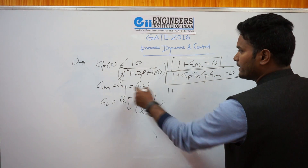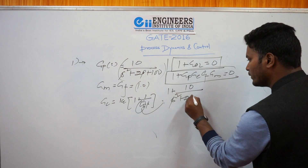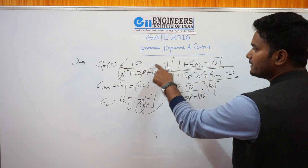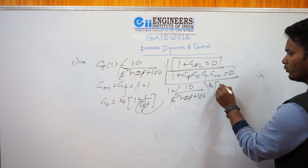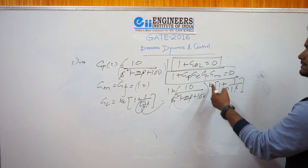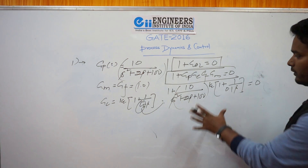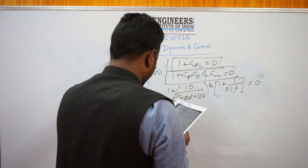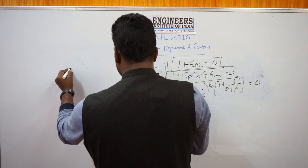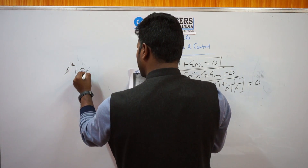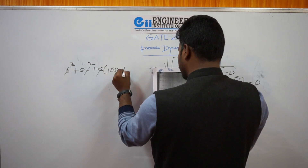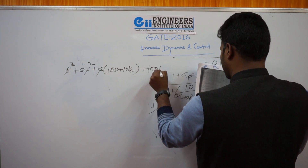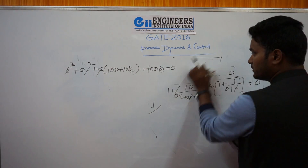GP is given as 10 upon s squared plus 2s plus 100. GC is the PI controller: Kc into 1 plus 1 upon 0.1 times s. GF and GM are equal to 1. If you solve this equation you get the polynomial: s cubed plus 2s squared plus 100 plus 10·Kc times s plus 100·Kc equals 0.